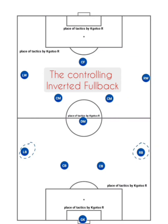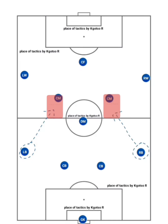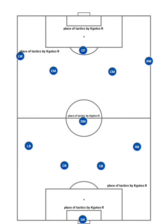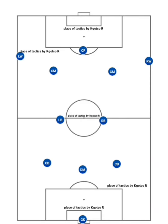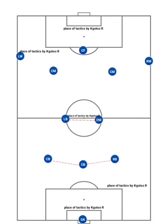The controlling inverted fullback. This type of fullback, in the first phase, tends to move into positions more traditionally occupied by the central midfielders or the pivot. This can occur with two controlling fullbacks allowing the defensive midfielder to temporarily drop into center to create a 3-2 structure, or maintain a 2-3. If paired with a defensive inverted fullback, they would invert alongside the pivot to maintain a 3-2 shape.